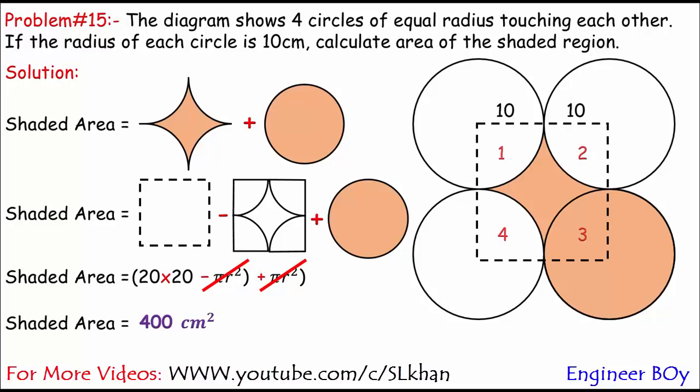So the shaded area must be 20 times 20, which is 400 square centimeters. So we got 400 square centimeters as the area of the shaded region.